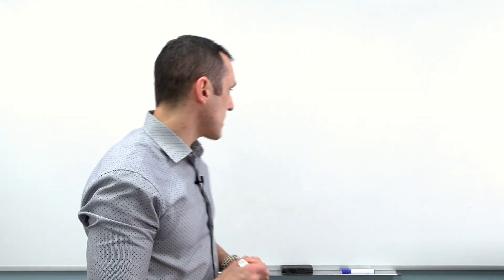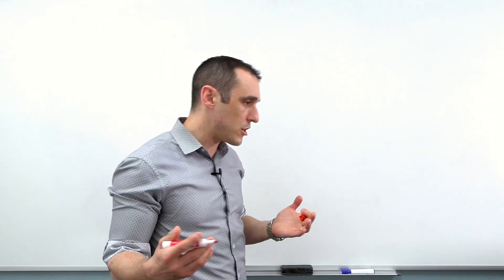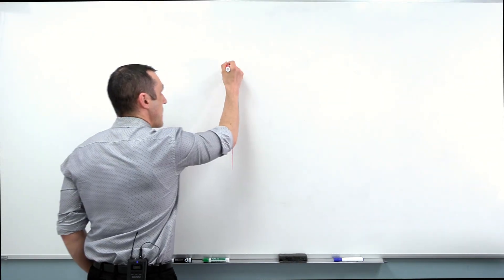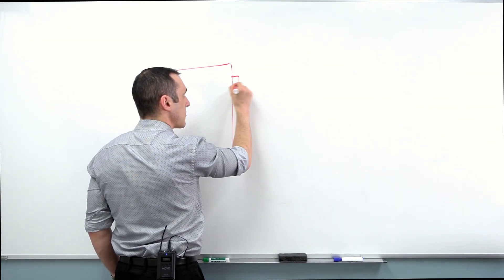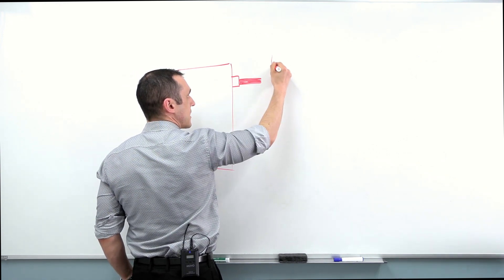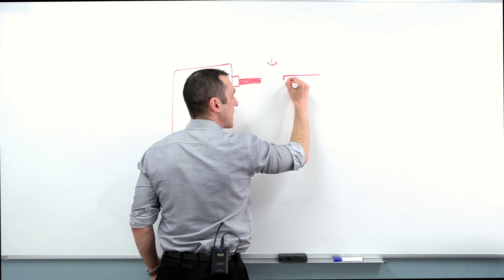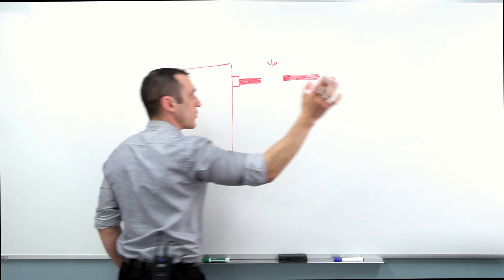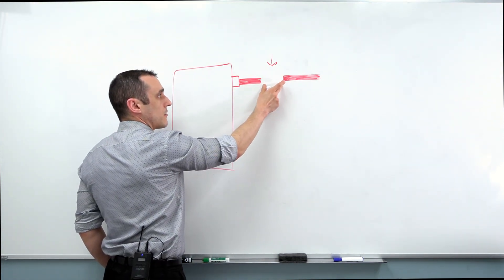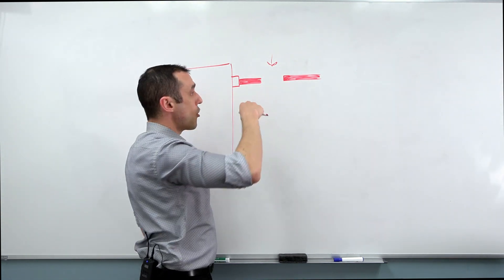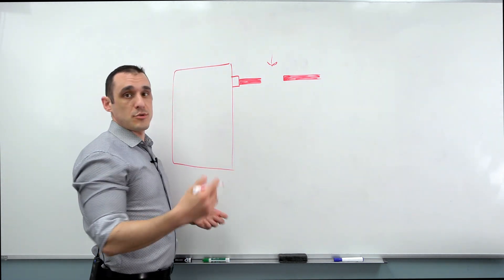A solder bridge is essentially a section of copper that makes it very easy to connect or disconnect a trace or a component. A good way to start is with an example. Let's say you have a component with a pin coming off it, and then a trace, and you want to have a reconfigurable connection between this trace and another section of trace going off to another component or into a via.